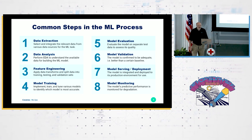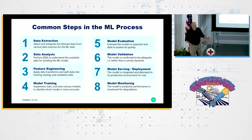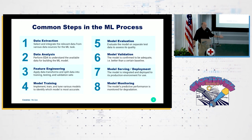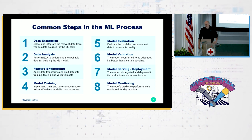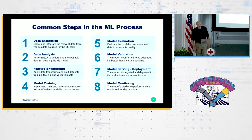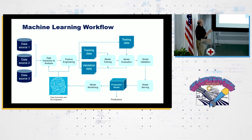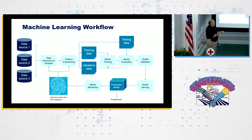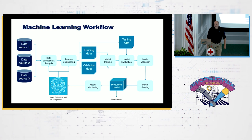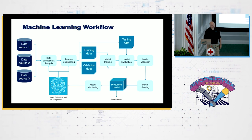After we've validated the model, we want to serve it up and deploy it — get it out into production, test it, and get it into whatever our production environment might be. That could be an API called by other applications, a service in a microservices architecture, part of a website, or part of one of your existing apps. Then we want to monitor that model in production. Graphically, this flows from data sources through data analysis and feature engineering, into model training with different datasets for training and evaluation, then validation, serving, deployment, and monitoring.